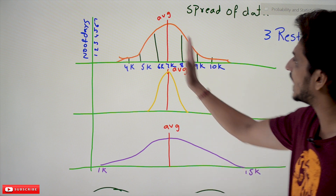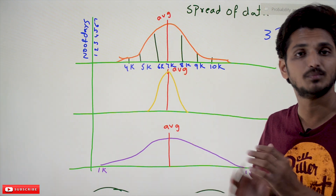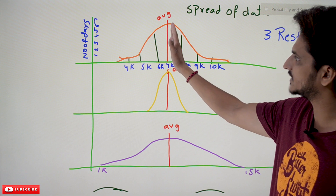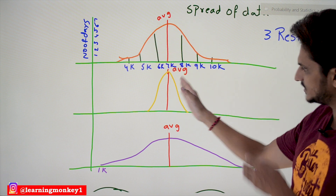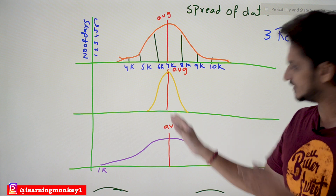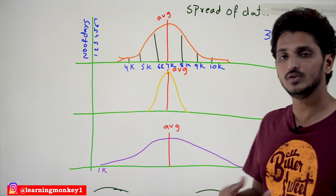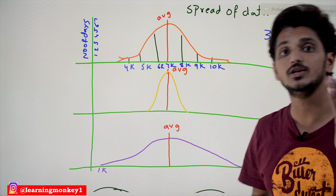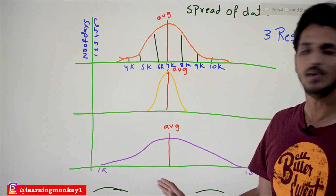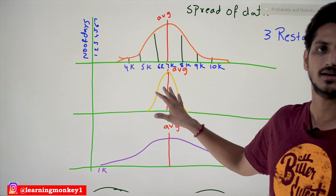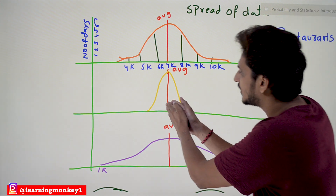From these three diagrams, on average each restaurant is getting 7,000 per day. Restaurant one, restaurant two, and restaurant three — all are getting 7,000. If someone asked you to buy any one of these restaurants, which one would you go with? Everyone is collecting 7,000.